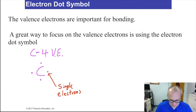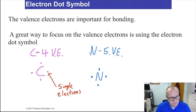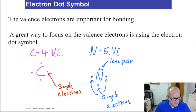For nitrogen, which has 5 valence electrons, you draw N with electrons north, south, east, and west — but that's only 4. After the 4th valence electron, you have to start pairing them. So the 5th electron gets paired with one of the existing ones. A pair of electrons is called a lone pair. Nitrogen ends up with three single electrons and one lone pair.